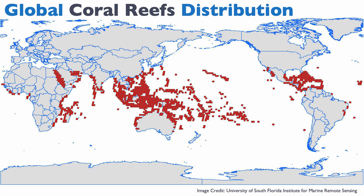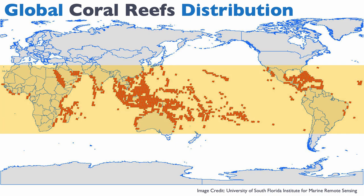Let's look at the distribution of reefs in terms of latitude. Here you have a global reef distribution map with reefs shown in red. Something striking: all reefs are within 30 degrees of latitude from the equator — 30 degrees north to 30 degrees south. Beyond this, we do not have reefs. There is a strong latitudinal control on reefs, which of course translates into a temperature control.